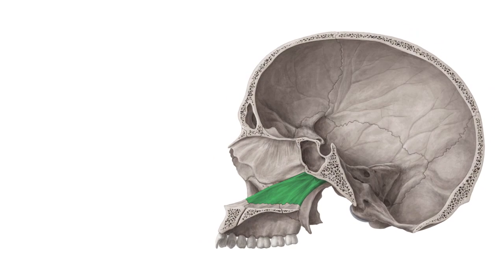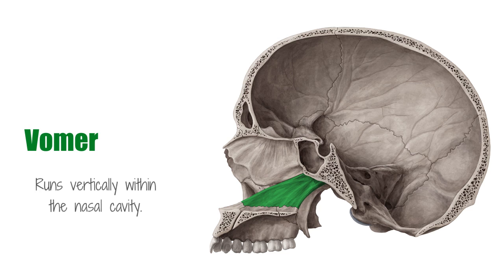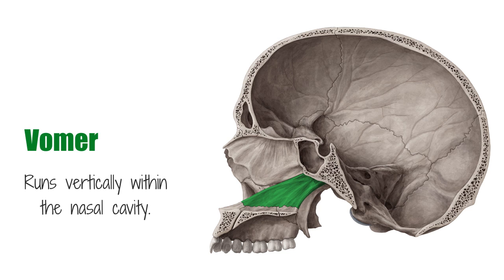Hi there, it's Matt from Kenhub, and in this tutorial, we will be discussing the vomer bone. The vomer is a singular bone that runs vertically within the nasal cavity, separating the left and right sides.